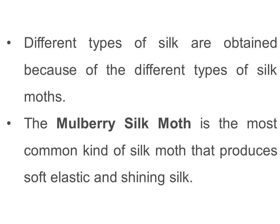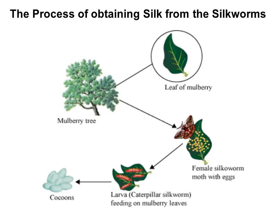Different types of silk are obtained because of different types of silk moths. The mulberry silk moth is the most common kind and produces soft, elastic, and shining silk. To revise the process: the female silk moth lays eggs; the larva or caterpillar feeds on mulberry leaves; then the caterpillar starts to weave a net-like structure called a cocoon. When the cocoon comes in contact with air, it hardens, and inside the cocoon the worm grows bigger in size and is called a pupa.